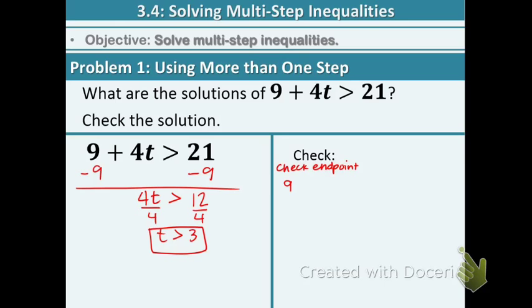The endpoint is 3. So we're going to use the equation and plug in 3 for t. So 9 plus 4 times 3 equals 21, 9 plus 12 equals 21, 21 equals itself. That is correct.